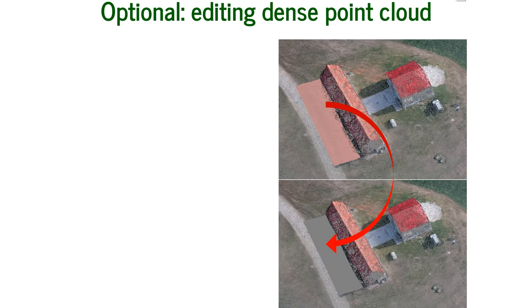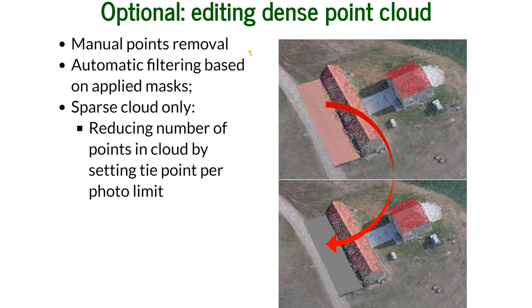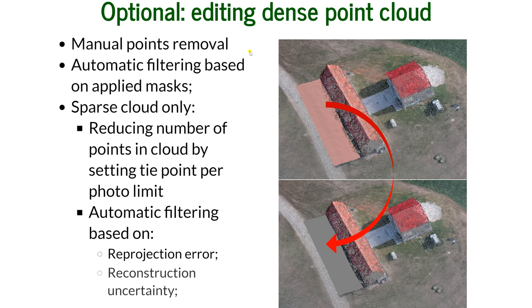You also have the option to edit the dense point cloud you just created. You can manually remove points — for example, I selected the shadow of a building and manually removed it. You can also automatically filter using applied masks, which need to be applied for each photo on the sparse point cloud only. You can automatically reduce the number of points by setting the tie point per photo limit, and you can also filter based on projection error, reconstruction uncertainty, and image count.